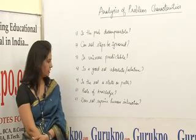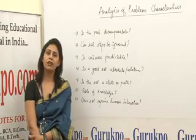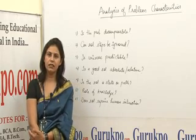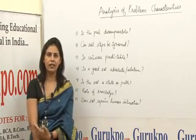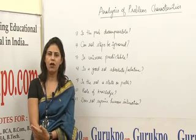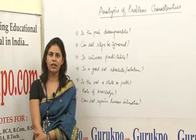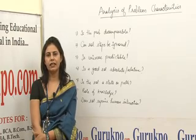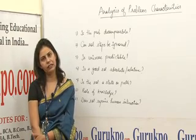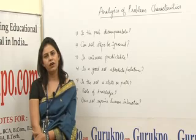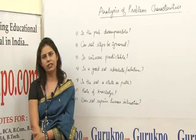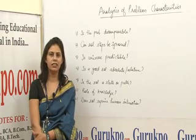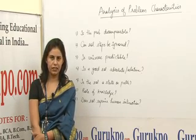The next key dimension is: does the solution require human interaction or intervention? Is our system capable of handling everything automatically, or is human interaction required in between? On the basis of this, we can categorize the problem solution into two categories: solitary, where no human interaction is needed, and conversational, where human interaction is required.